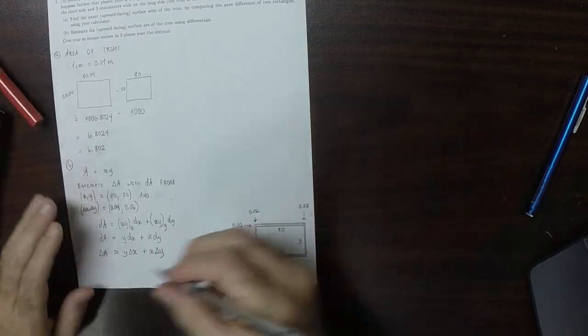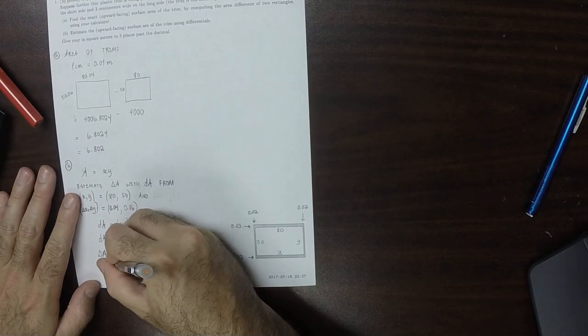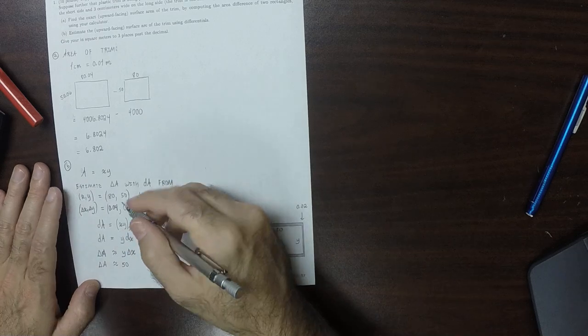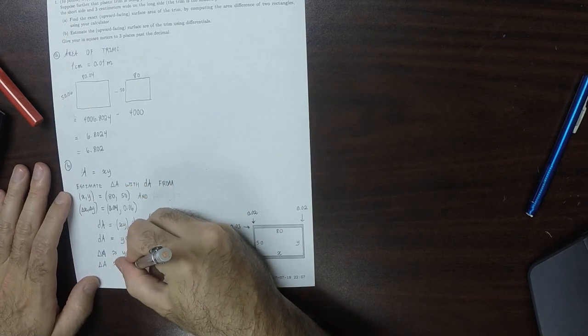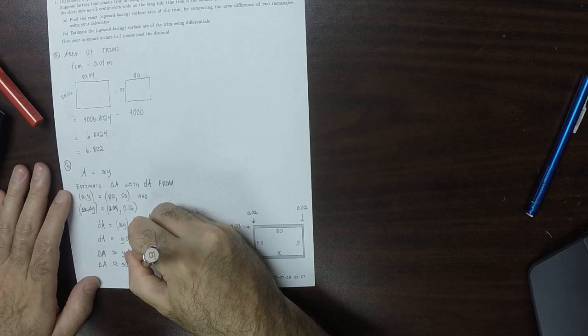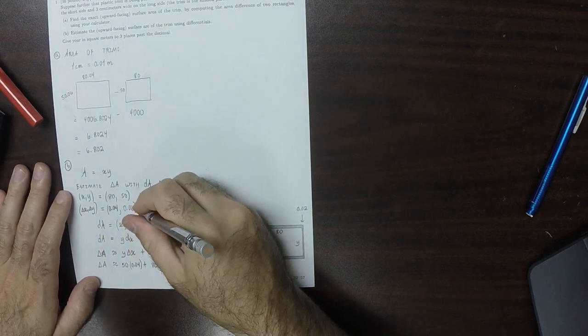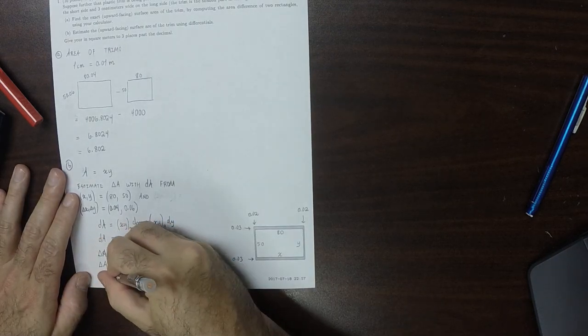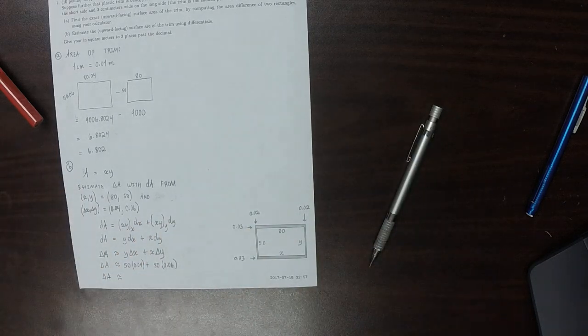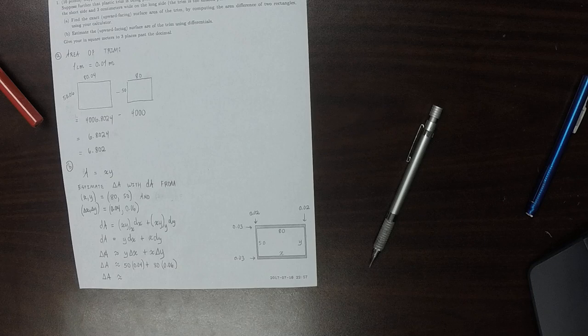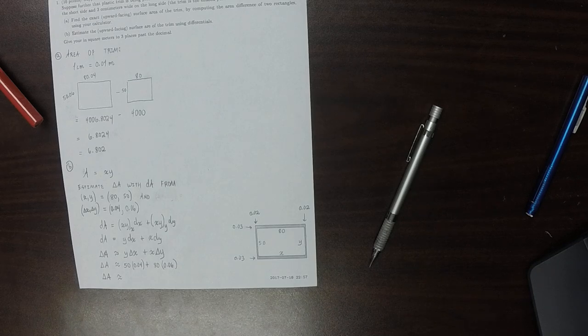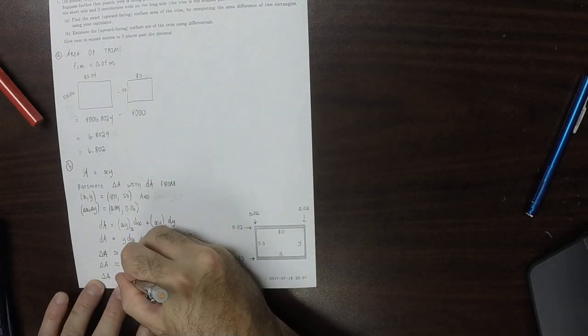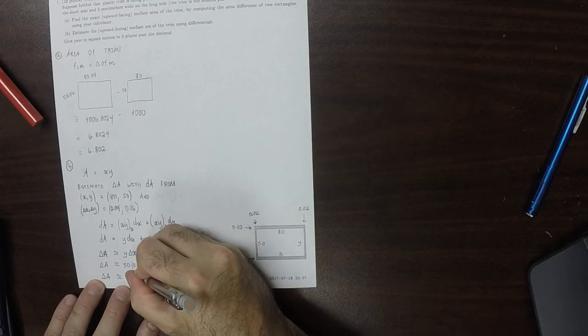So now we can plug in all the pieces, so delta a is approximately y is 50, so 50, and then delta x is 0.04, plus x is 80 and delta y is 0.06. Typing that into the calculator, that gives 6.8 exactly, so I'll write 6.800.